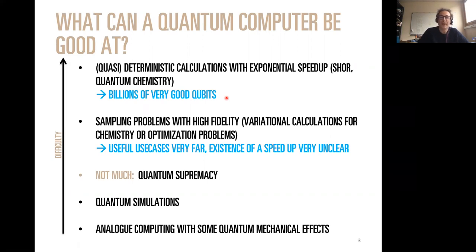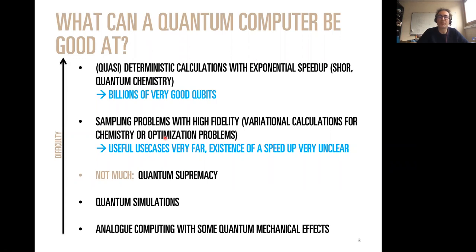So now people are focusing more on sampling problems. You give up on the idea of what I call quasi-deterministic results - a quantum computer always gives you something random, but for some algorithms you can make it such that the probability to get a given answer is almost one. Now the shift is towards sampling problems, where you get random numbers that can be used to calculate averages, useful for quantum chemistry or optimization problems.